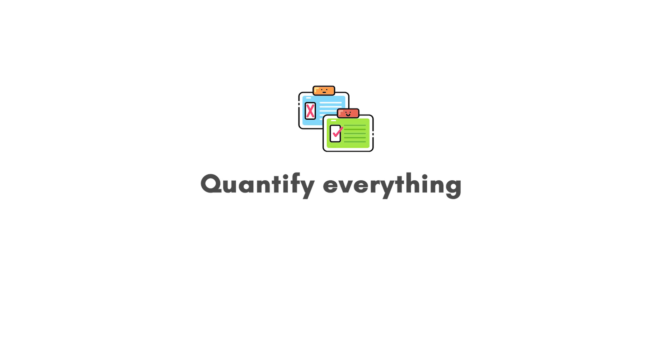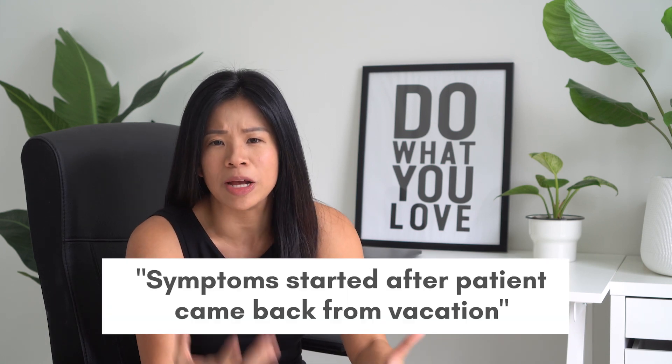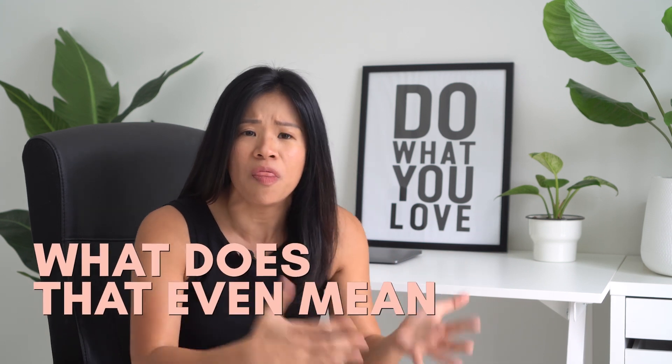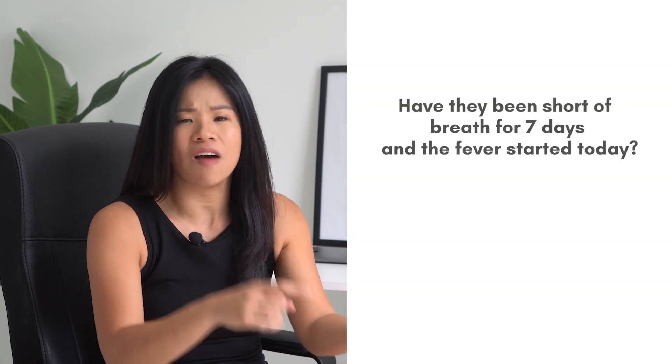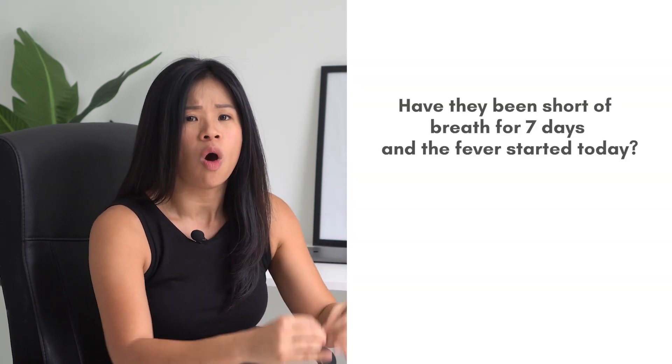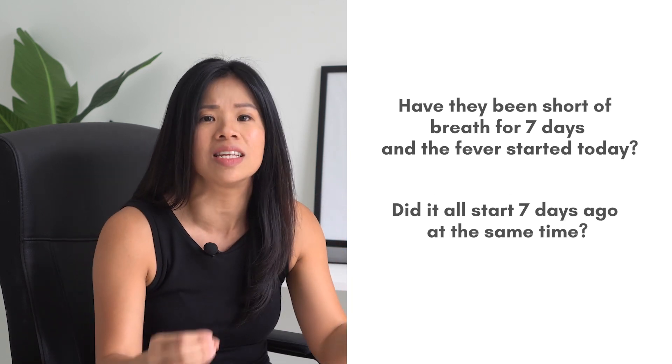The next tip is to be specific in your note — quantify everything. I always laugh when I see a note that says symptoms started after the patient got back from vacation. I have no idea when the patient went on vacation or when they came back. And when I see 'symptoms start on Thursday,' what does that even mean if I read this note a year later in court? When reading a note, I want to know how long the patient has had their symptoms — have they been short of breath for seven days and the fever started today, or did this all start seven days ago at the same time?